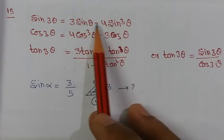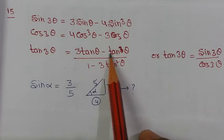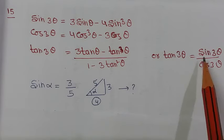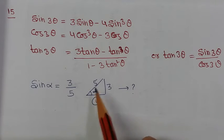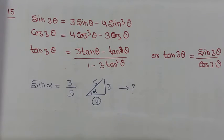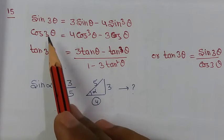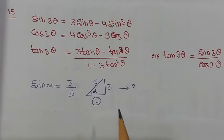By Pythagoras theorem, the base equals 4. So sin α equals 3/5, cos α equals 4/5, and tan α equals 3/4. Substituting these three values into the respective formulas gives sin 3α, cos 3α, and tan 3α. Or alternatively, tan 3α equals sin 3α upon cos 3α by dividing. Question number 15 is straightforward — just substitute values and get the result. Try it yourself.